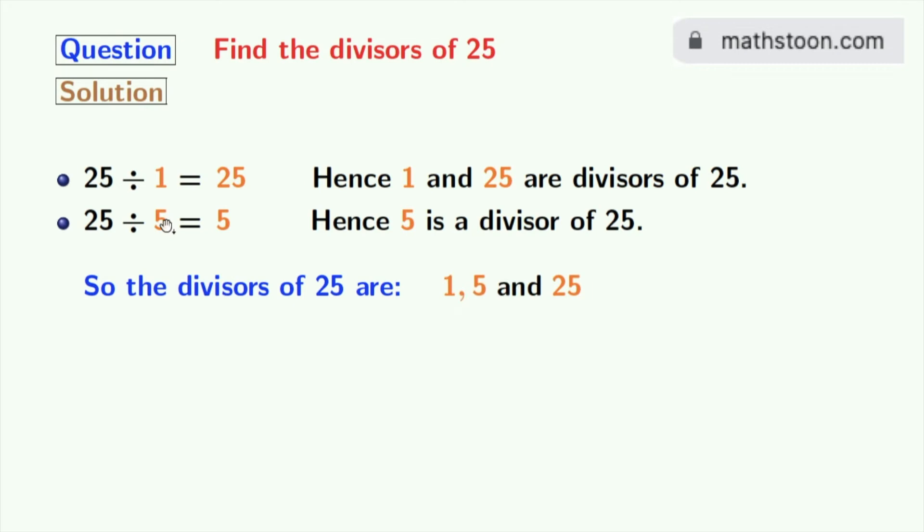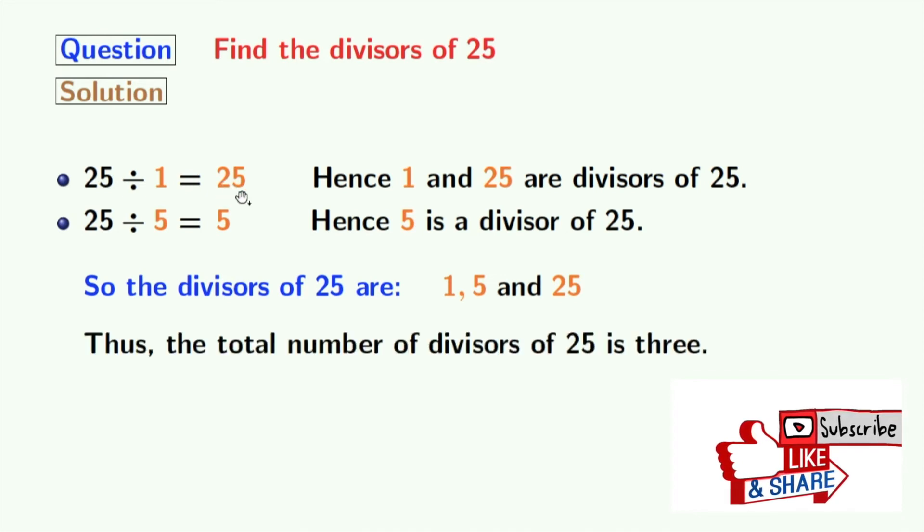So, the divisors of 25 are 1, 5 and 25. Thus, the total number of divisors of 25 is 3.